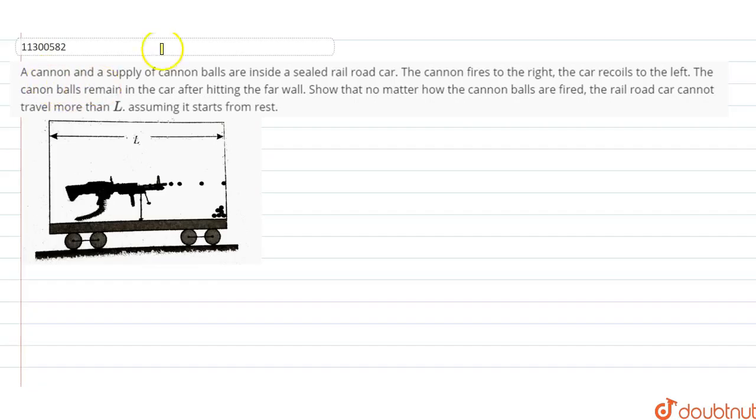There are many cannons and some cannon balls. They are inside a sealed railroad car. The cannon fires to the right. The cannon balls fire to the right. The car recoils to the left. The cannon balls remain in the car after hitting the far wall.